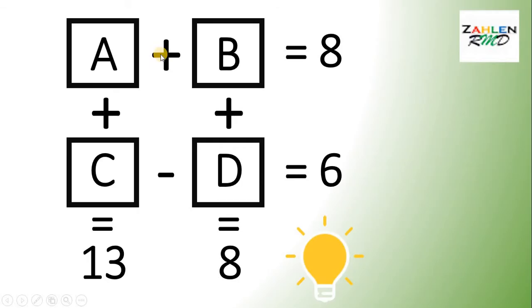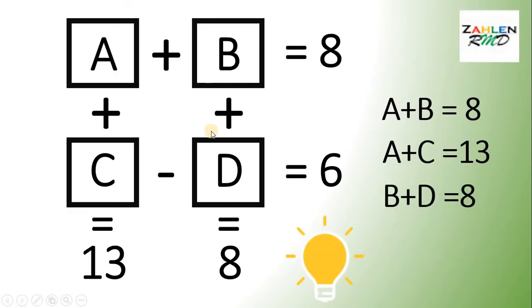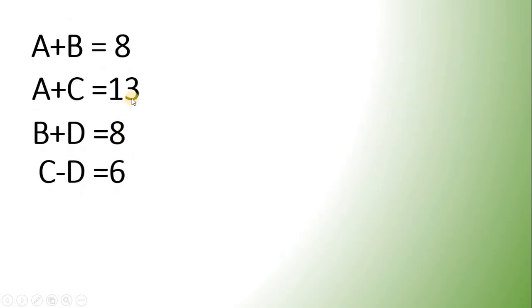So, we have A plus B will give us 8. A plus C will give us 13. B plus D will give us 8. And C minus D will give us 6. So, our problem now becomes an algebra problem. So, let's focus on this 4 equation. We have 4 equation with 4 unknowns.